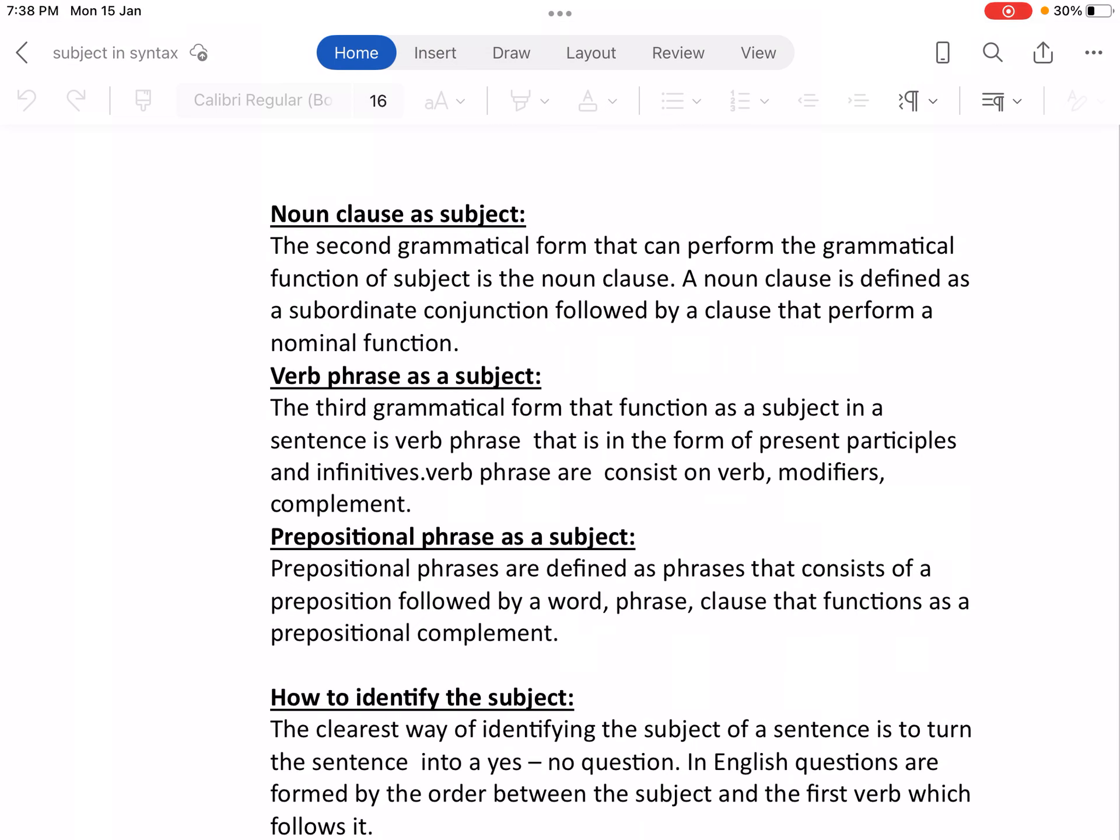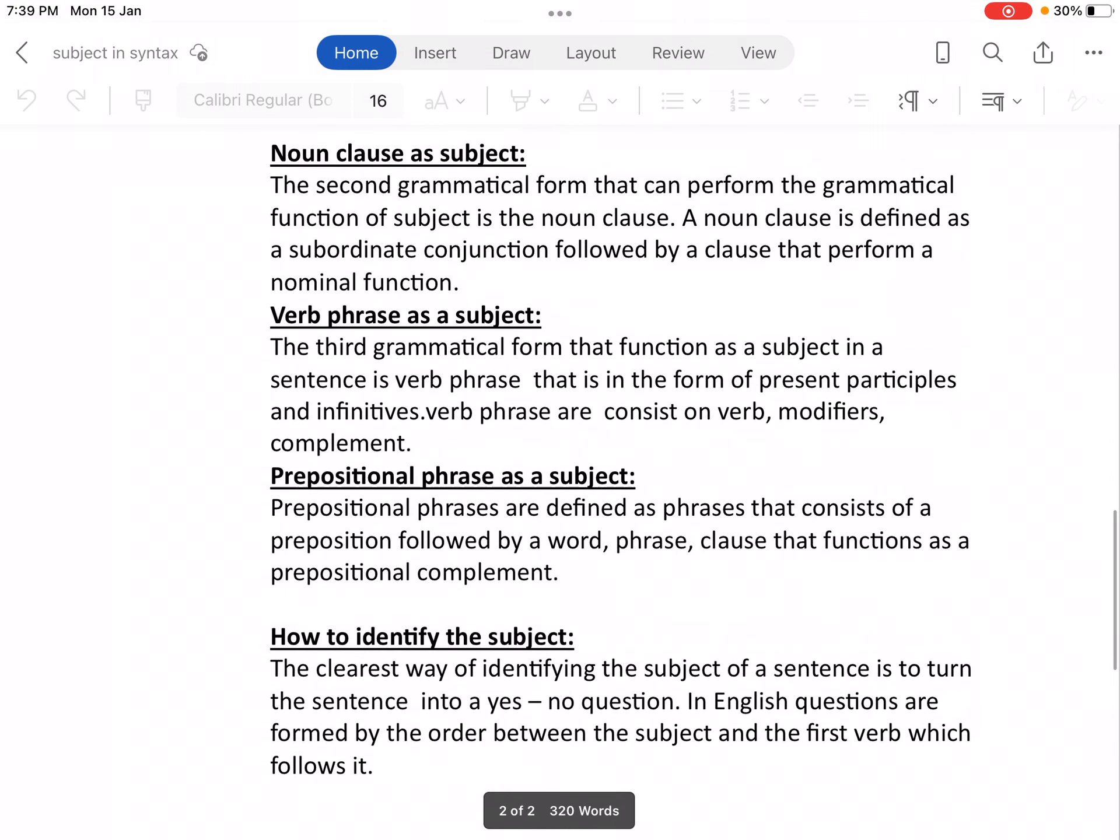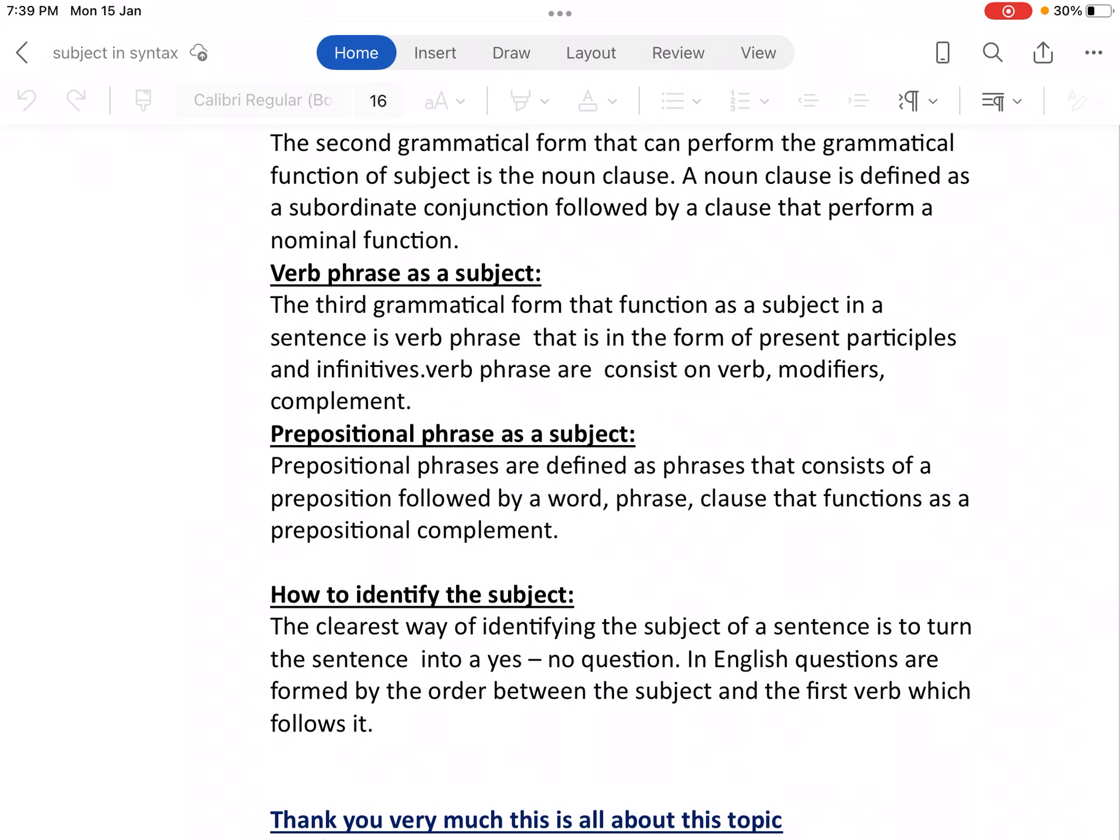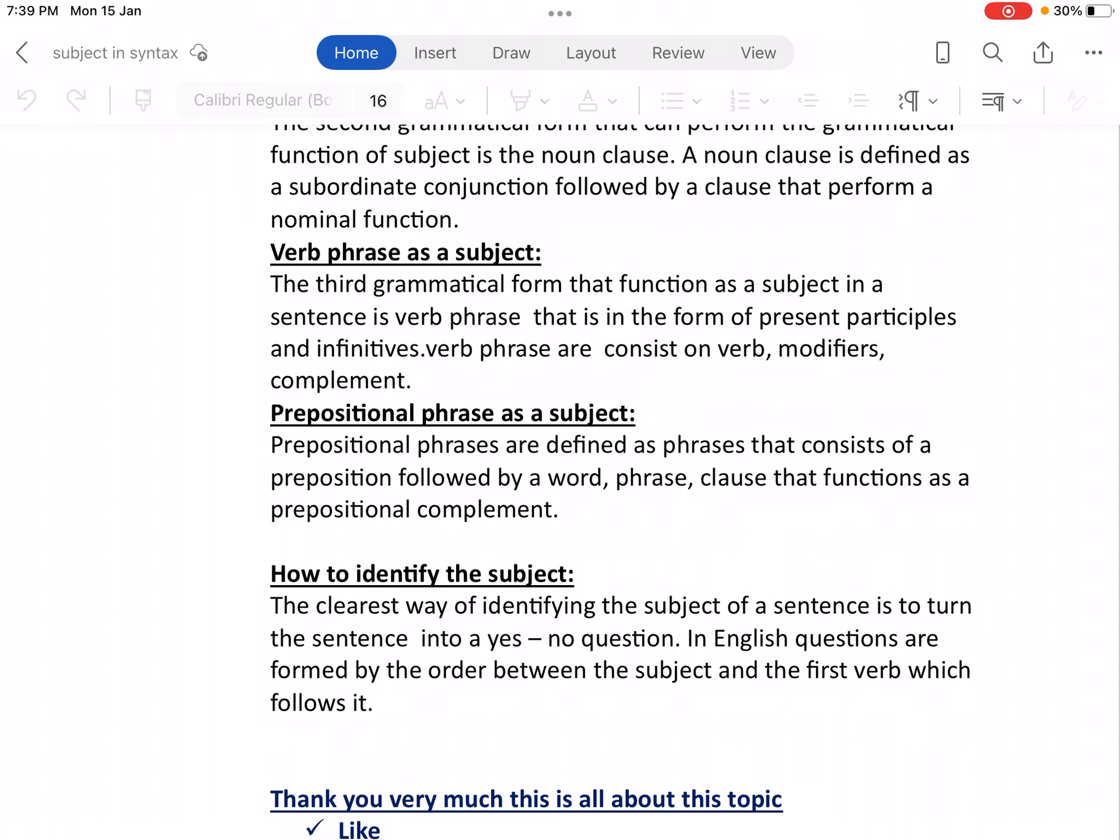When we make sentence structure, the first form of verb with 'to' before it makes infinitives, which work as noun phrase as subject. This includes participles and infinitives. Verb phrases consist of verb, modifiers and complements. Noun phrases have determiners. Verb phrases have modifiers.